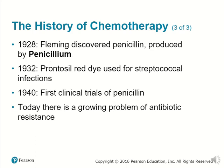In 1928, Fleming discovered penicillin, which was produced by Penicillium. In 1932, Prontosil, a red dye, was used for streptococcal infections. In 1940, the first clinical trials of penicillin were put into effect, and today there is a growing problem of antibiotic resistance, where surviving strains that survive these antibiotics are no longer in competition with other strains because those were killed off.